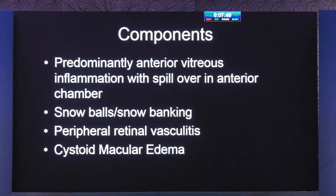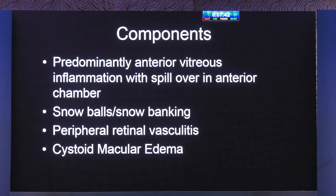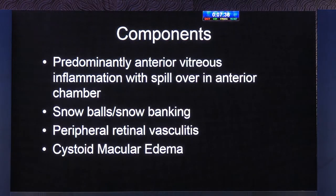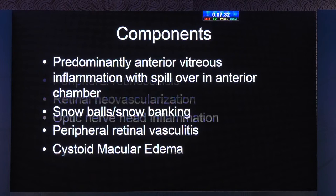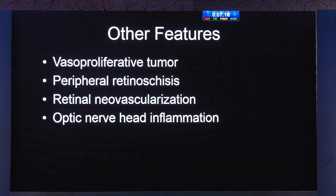Thank you very much. I'll be speaking on intermediate uveitis and a few common cases and presentations. Intermediate uveitis consists predominantly of anterior vitreous inflammation with spillover into the anterior chamber, and hallmark characteristics such as snowballs and snow banking in the periphery, peripheral retinal vasculitis, and cystoid macular edema. You can also find retinal vasoproliferative tumour-like growths, peripheral retinal neovascularization, and peripheral retinoschisis as indicators of active inflammation, sometimes accompanied by optic nerve head inflammation.